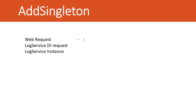Let's look at the numbers for Add Singleton. If you have one web request and one DI request, the number of instances will be one. If you have one web request and two DI requests, the number of instances is still one. If you have one web request and N number of DI requests, you will still have only one object created. In Singleton, only one object is created and used across the entire application.